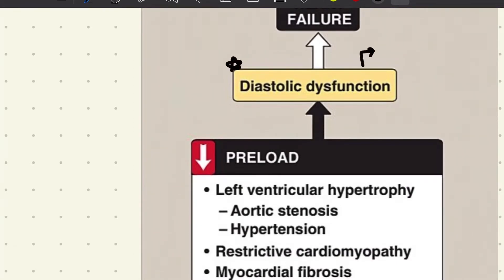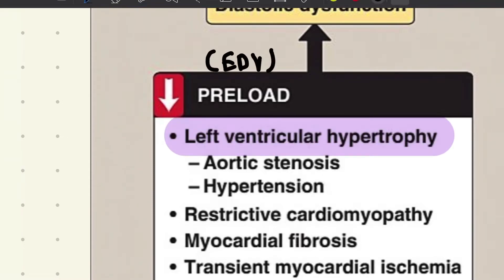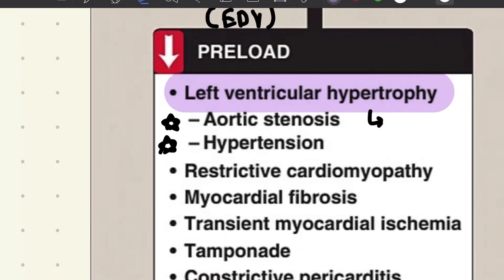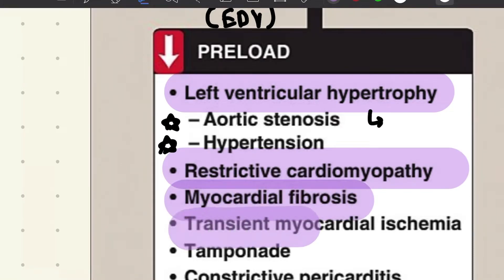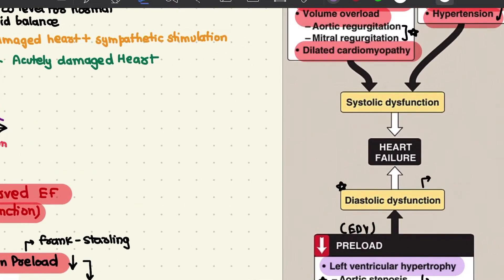Diastolic dysfunction results from abnormal relaxation of the heart. Factors that decrease preload or end-diastolic volume include left ventricular hypertrophy, which narrows the ventricular cavity — seen in aortic stenosis and hypertension. Other causes include restrictive cardiomyopathy, myocardial fibrosis, transient myocardial ischemia, cardiac tamponade, and constrictive pericarditis. These are the main reasons that lead to systolic as well as diastolic dysfunction.